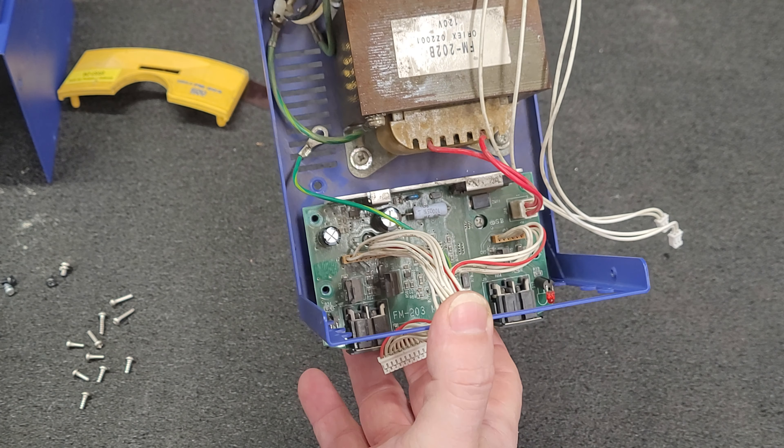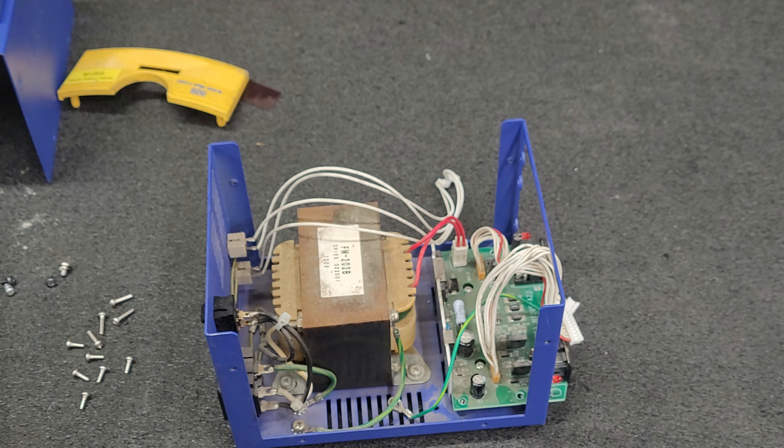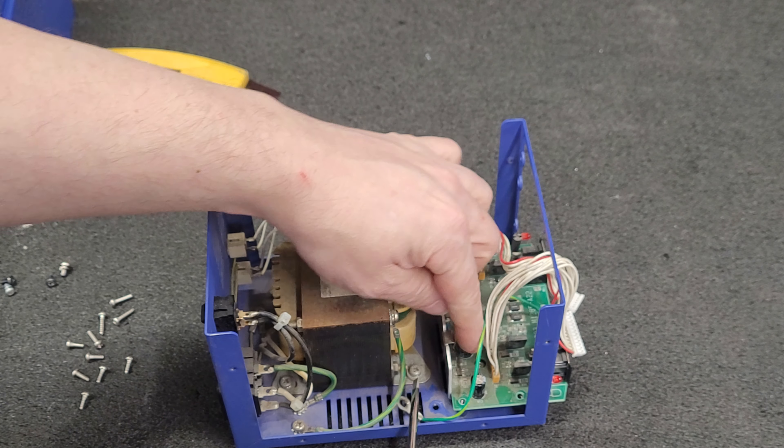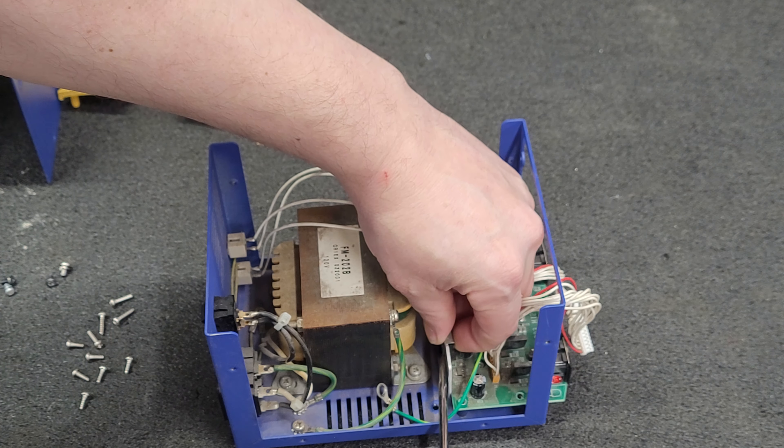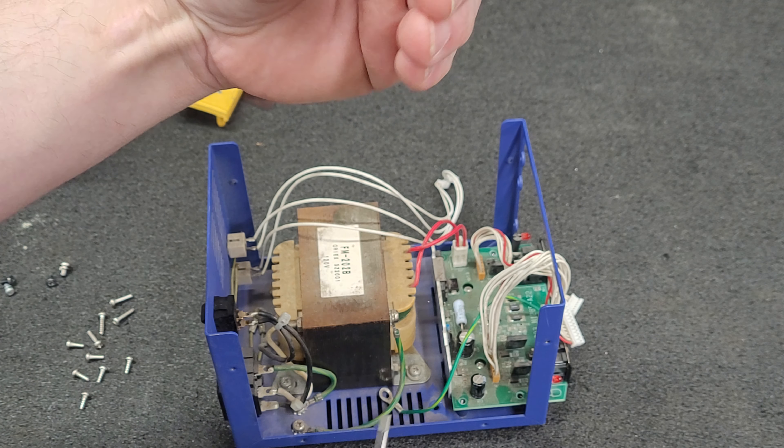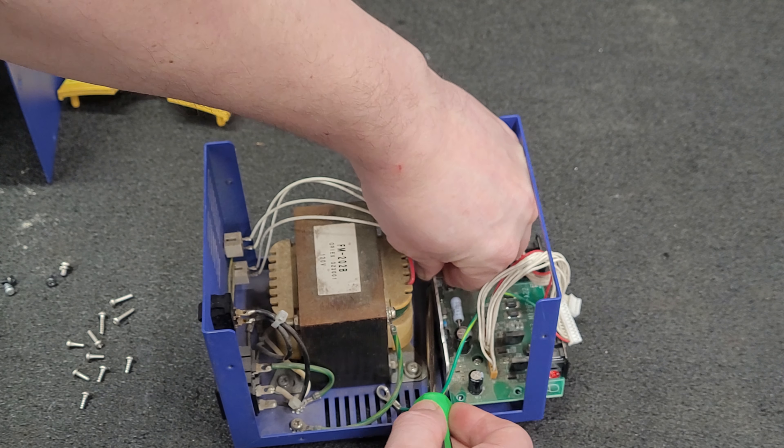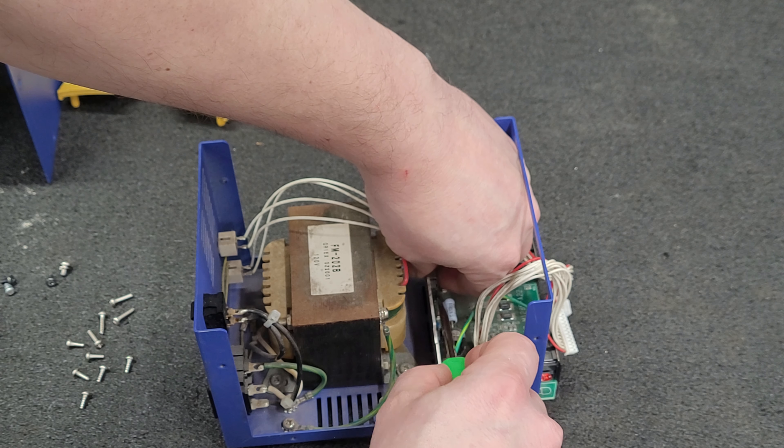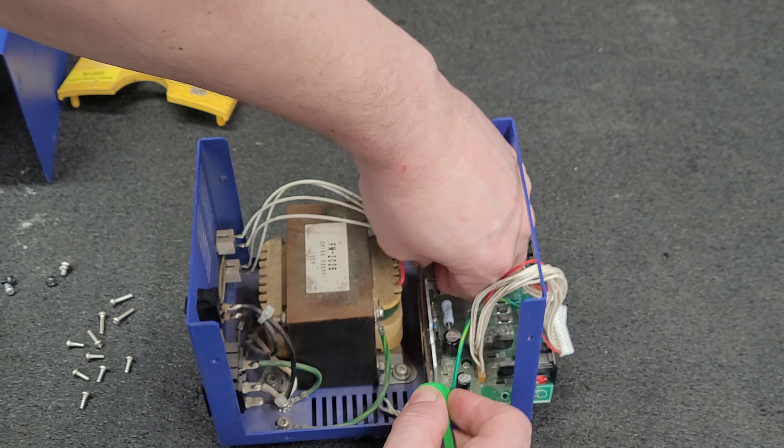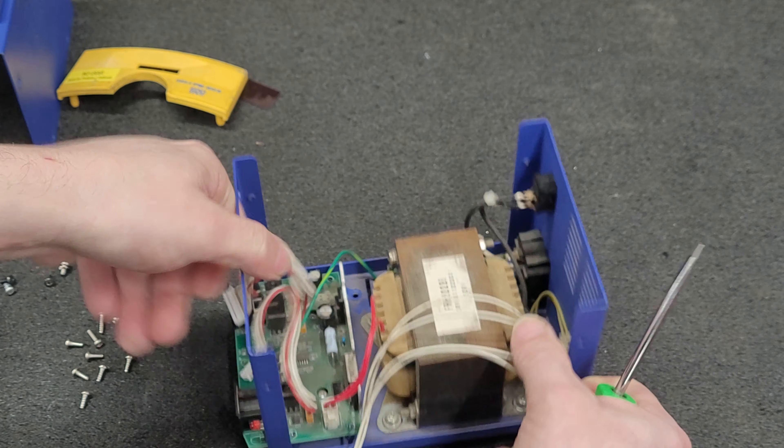But after those four screws are removed, I like to come in from behind because it's got a little divot. Just remove the clip on the voltage regulator. It's on there pretty tight.